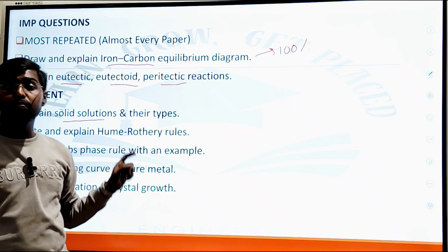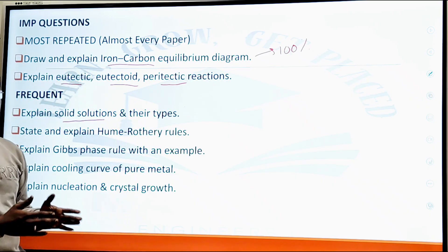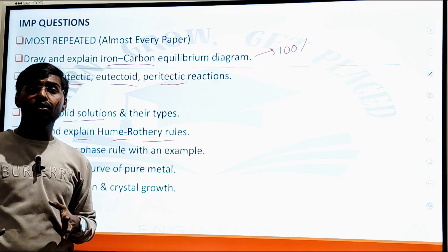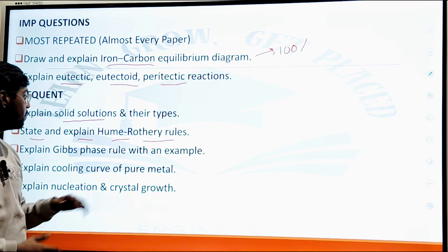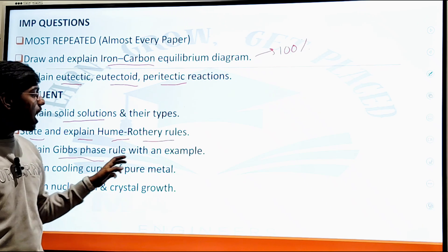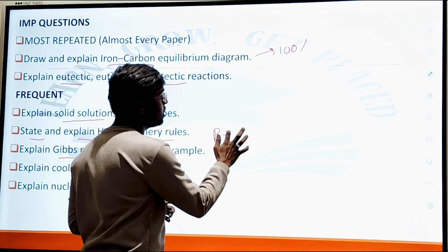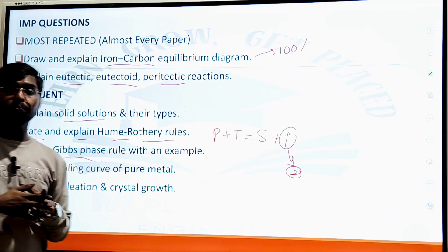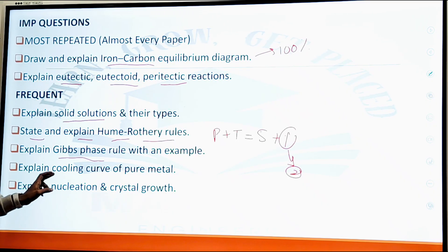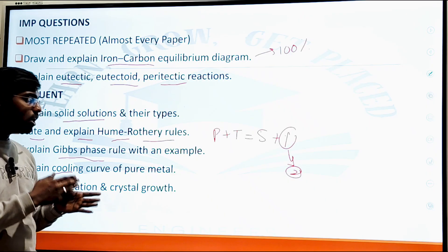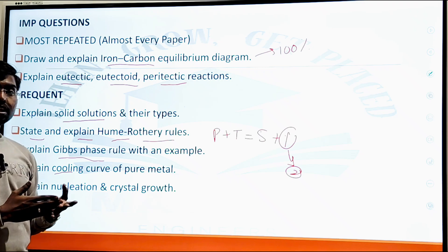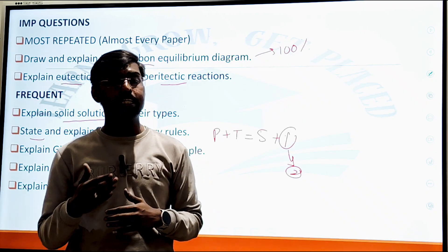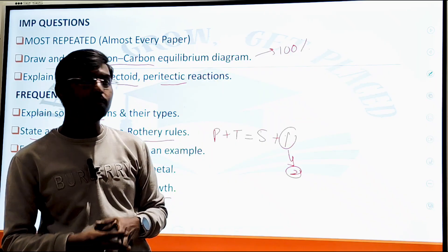Other Unit Two topics include: solid solution — define and explain types; Roozeboom rules — four parameters are asked in the end semester examination; Gibbs phase rule — two forms: P + F = C + 1, and P + F = C + 2; cooling curve for pure metal, solid, liquid, and all metal types; and nucleation and crystal growth — types of nucleation: homogeneous and heterogeneous.